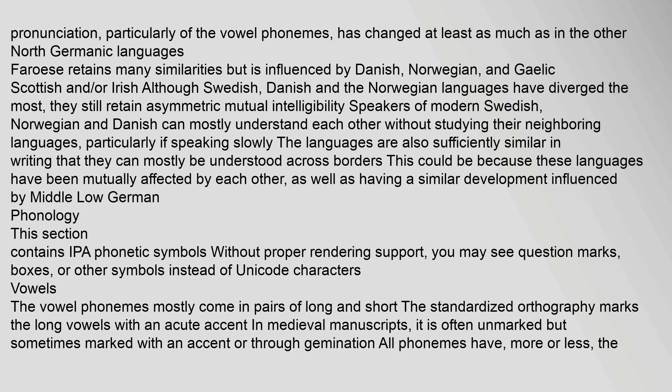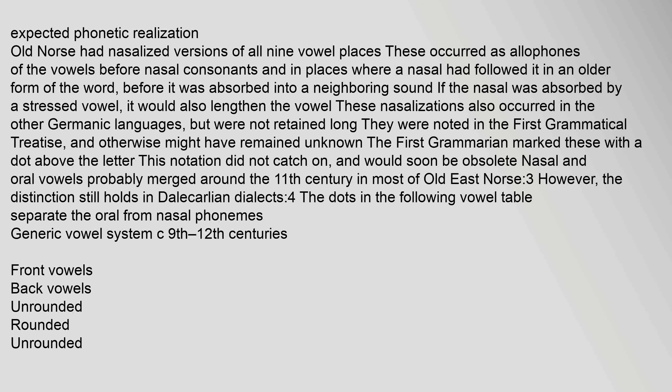The vowel phonemes mostly come in pairs of long and short. The standardized orthography marks the long vowels with an acute accent. In medieval manuscripts it is often unmarked, but sometimes marked with an accent or through gemination. Old Norse had nasalized versions of all nine vowel places. These occurred as allophones of the vowels before nasal consonants, and in places where a nasal had followed it in an older form of the word before it was absorbed into a neighbouring sound. If the nasal was absorbed by a stressed vowel, it would also lengthen the vowel. These nasalizations also occurred in the other Germanic languages but were not retained long. Nasal and oral vowels probably merged around the 11th century in most of Old East Norse.